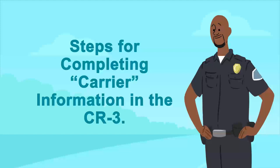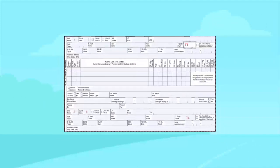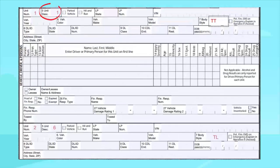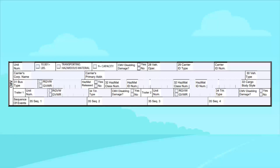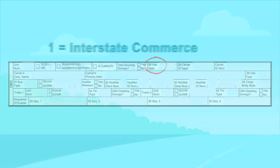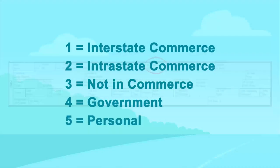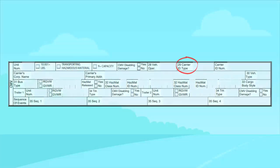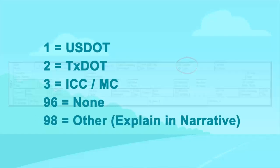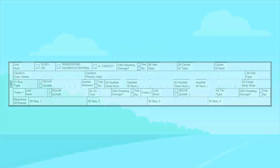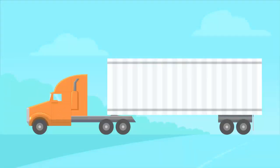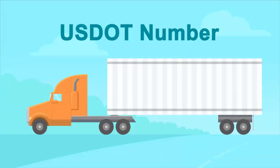Steps for completing carrier information in the CR3: If the CMV unit exists, the unit description field is coded as a motor vehicle, towed or pushed vehicle, or trailer and the hit-and-run flag is set to No, the following information should be entered in the CMV section. Enter the vehicle operation information based on the code sheet values listed in the CR3 form. Enter carrier ID type based on the code sheet values. If the vehicle operation is personal, code carrier ID type as None. Carriers operating interstate commerce will normally have a U.S. Department of Transportation or U.S. DOT number.